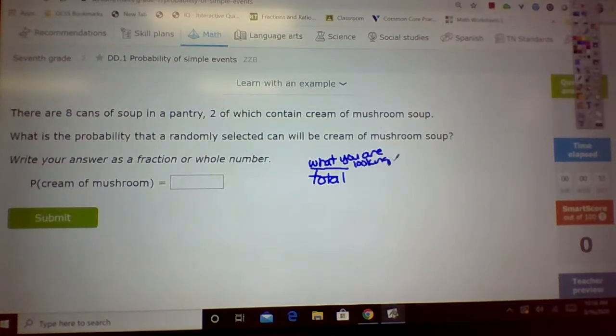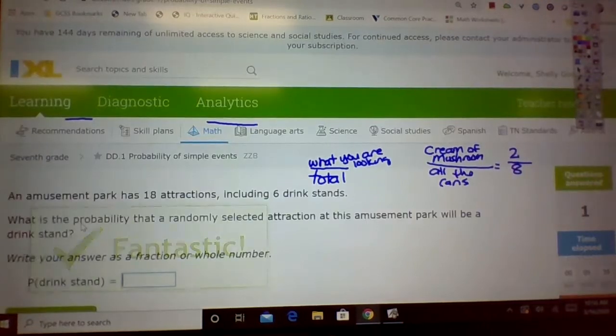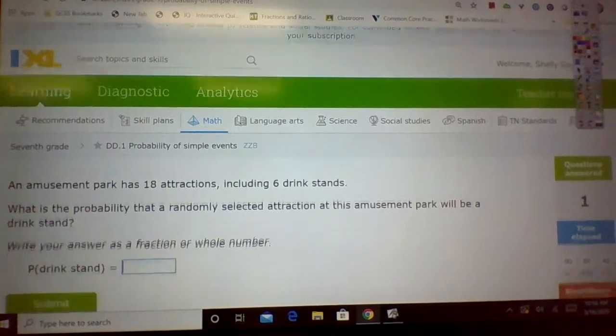All right, so in this case we're looking for cream of mushroom, right? And the total is all the cans. So how many cream of mushroom soup cans do we have? Two. How many total cans? There's two of these and there's eight of these. So you're going to put eight. Then you'll reduce it. It says write it as a fraction or whole number. I did have somebody check, and if you put in two eight, it will mark you wrong. So you don't have to reduce it if you think that's going to help, if that's going to mess you up.